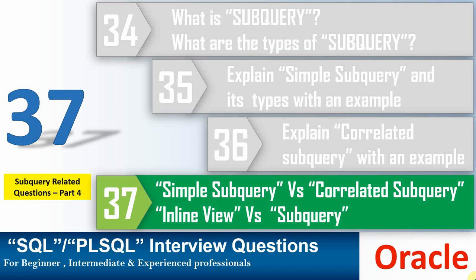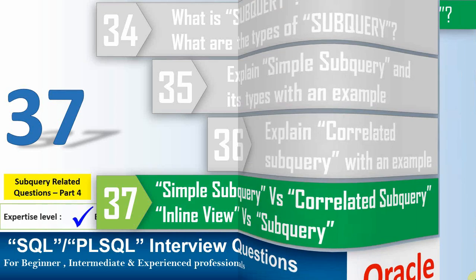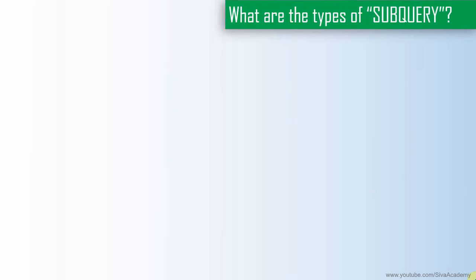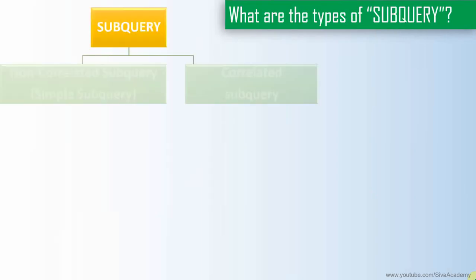In the previous videos, we have seen about what is a subquery, what are all the types of subquery, and we saw in detail about simple subquery and correlated subquery with few examples. In this video, we will see a summary of differences between a simple subquery, correlated subquery, and what we call an inline view.